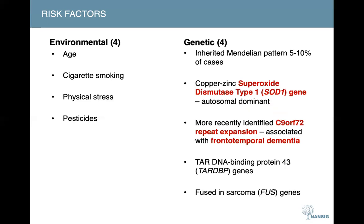Research has shown that there are a variety of genetic factors associated with MND. The two most common genes involved are the SOD1 gene, which is inherited in an autosomal dominant pattern, and the C9ORF72 gene, which is interestingly associated with frontotemporal dementia. There are a number of other genes involved as well, such as the TARDBP genes and the FUS genes.